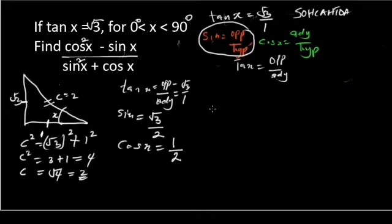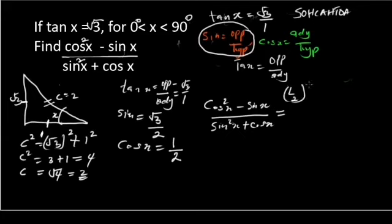Now we can solve for the cos squared of x minus sine x, all over the sine squared of x plus cos x. Now we've defined cos x to be 1 over 2, all squared, minus root 3 over 2, all over sine squared x. Sine is root 3 over 2, root 3 over 2 all squared, plus cos x which is half.